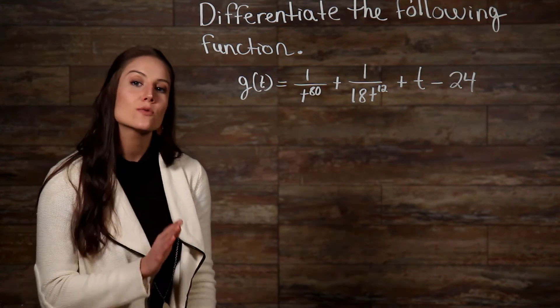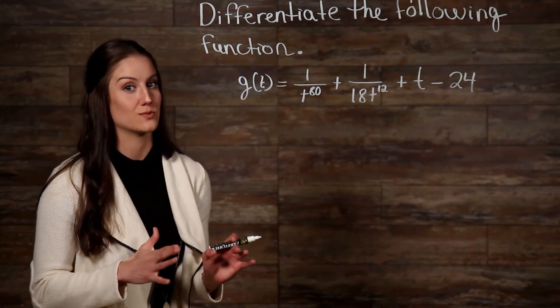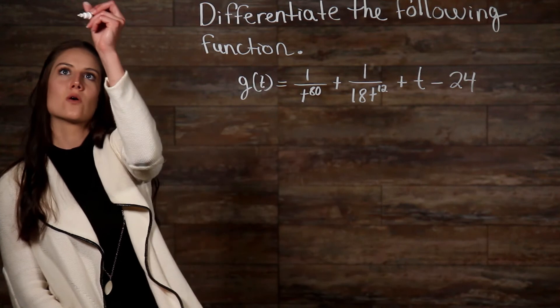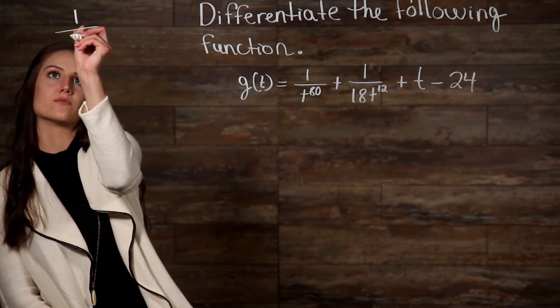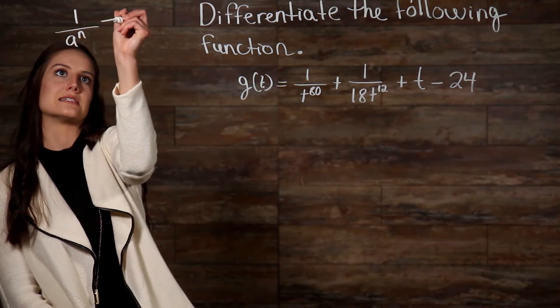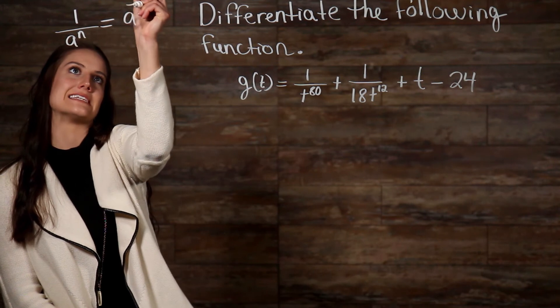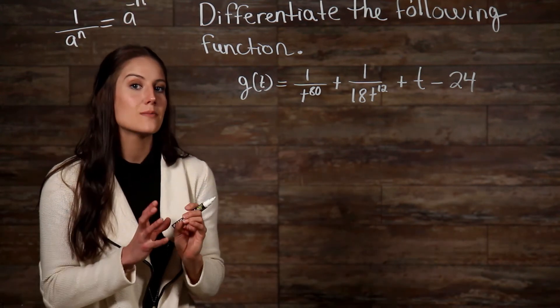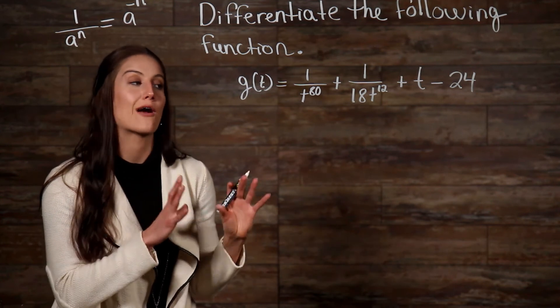However, we can rewrite this to get out of having to deal with fractions. If you recall, the exponent rule states that 1 over a to the n is the same thing as a to the negative n. So, with this in mind, we can go ahead and rewrite our function.